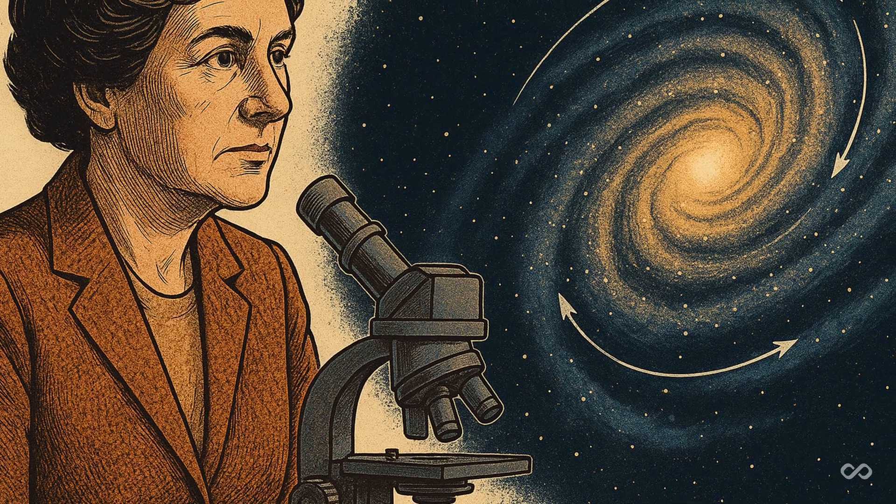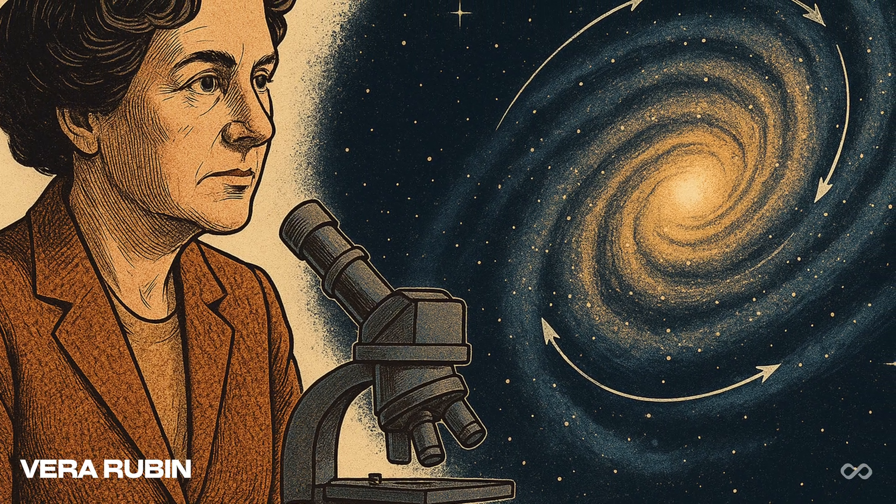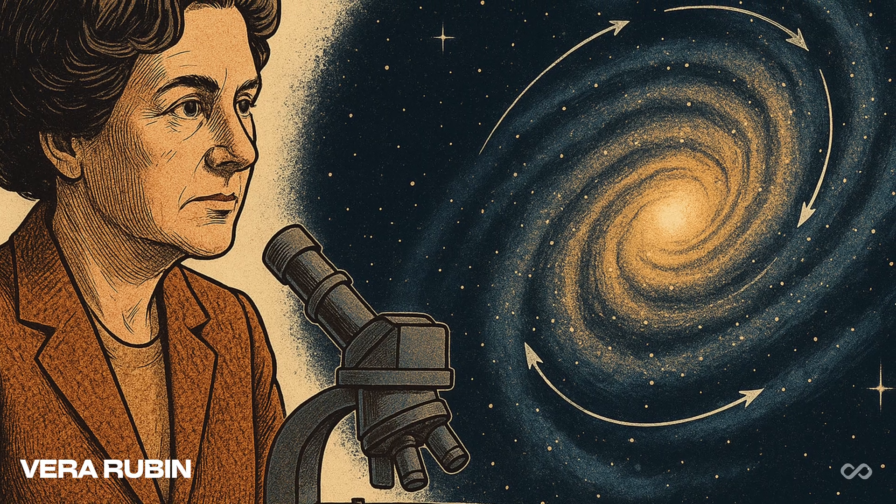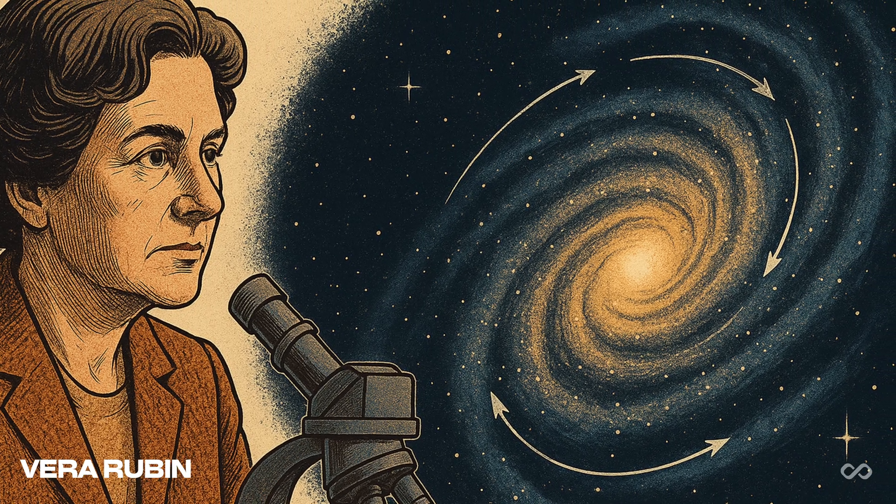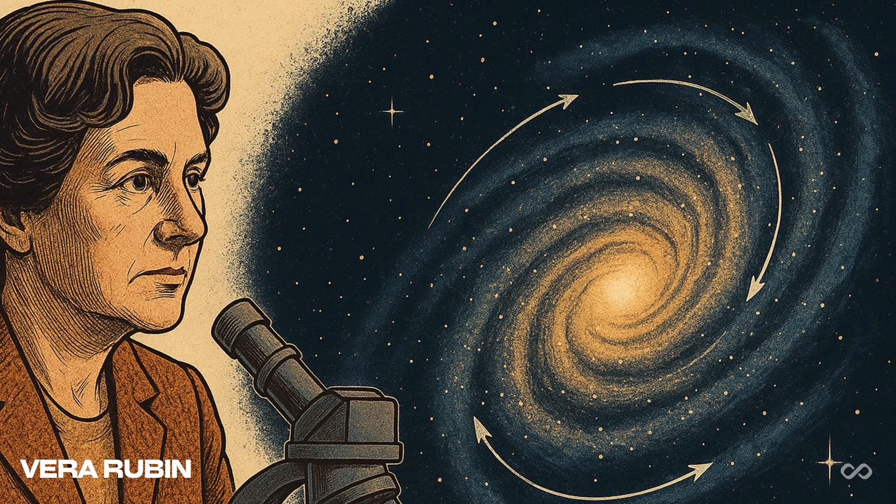In the 1970s, astrophysicist Vera Rubin made a startling observation. When she measured the rotation speeds of stars in galaxies, she found something off.